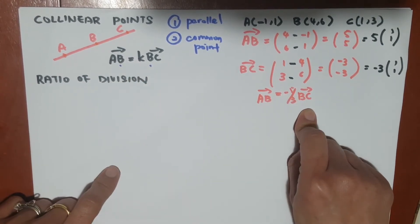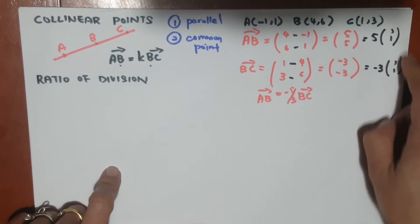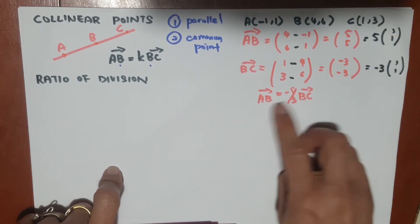So this is proven to be collinear, because number one, they are parallel, and number two, they have a common point.